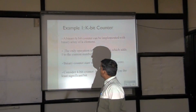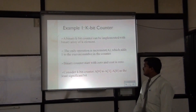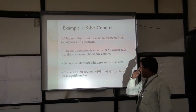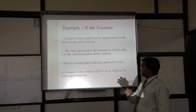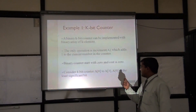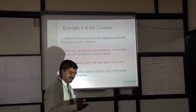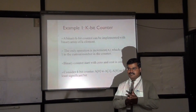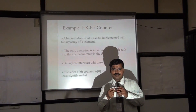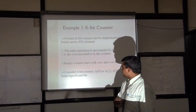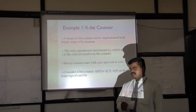Let us see one example: a k-bit counter. A binary k-bit counter can be implemented using an array of k elements. The only operation included is incrementing the value of A, where A is an array, which adds one to the current number in the counter. The binary k-bit counter starts with 0, and initially no cost is assigned. We consider a 4-bit counter where A[0] to A[3], with A[0] as the least significant bit and A[3] as the most significant bit.